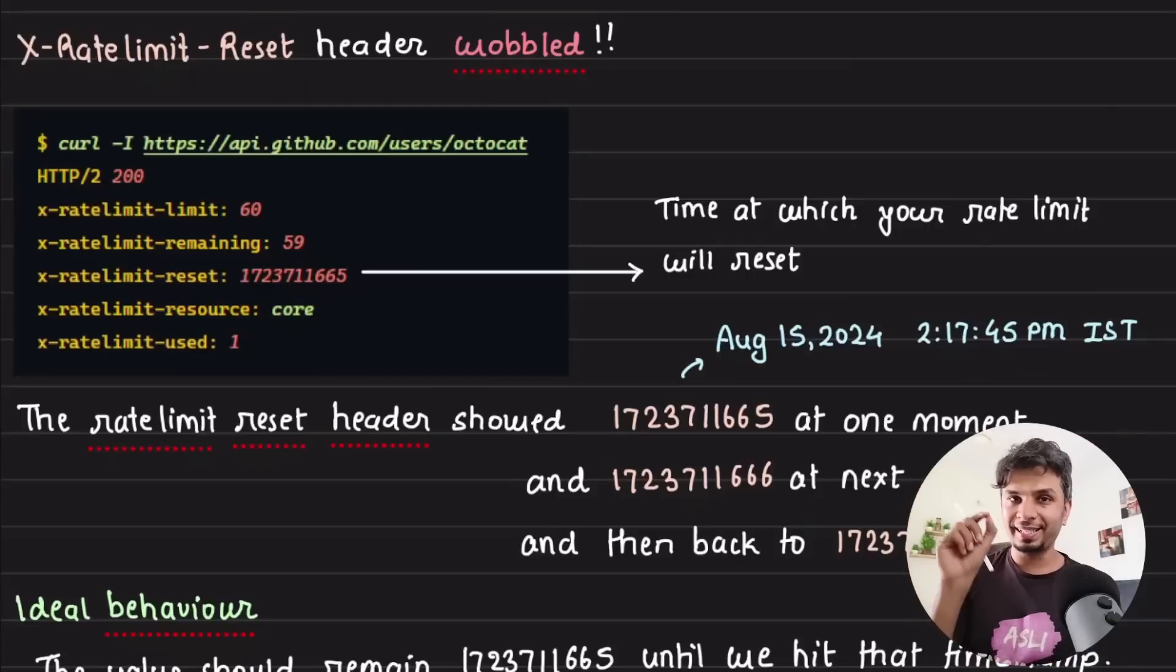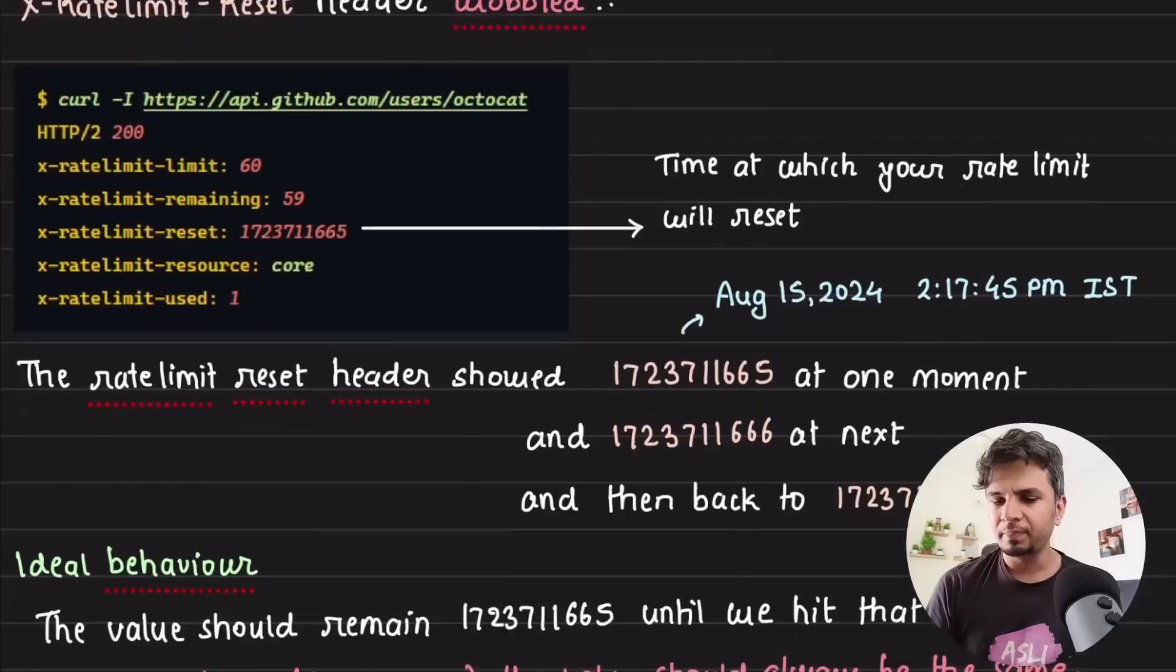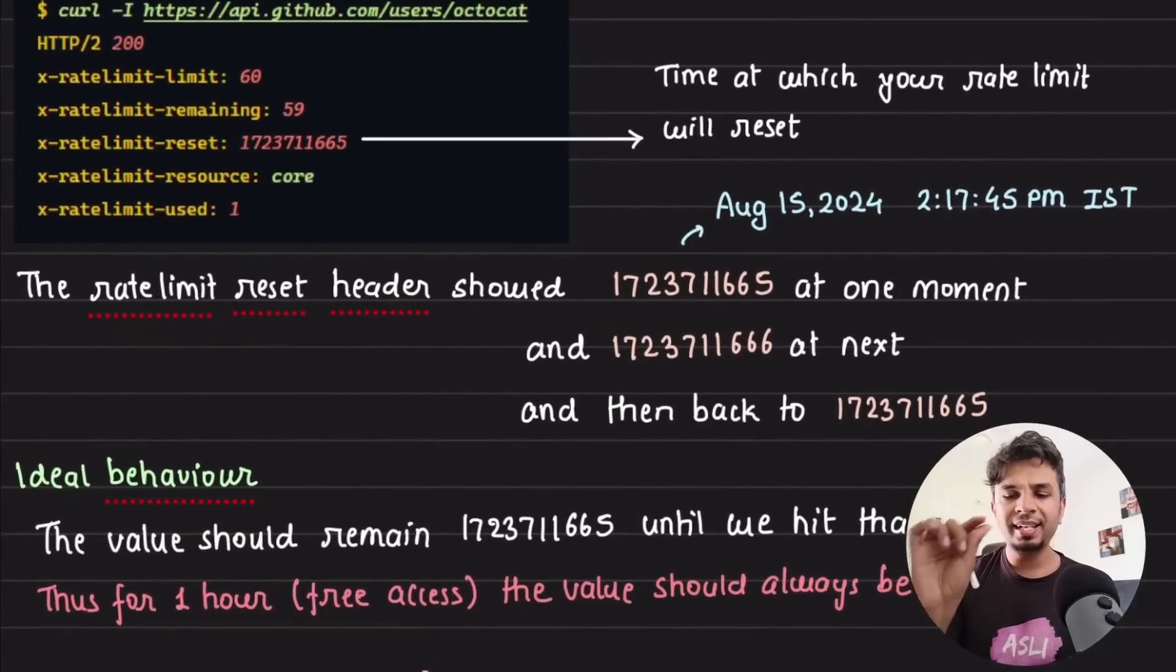So this tells you that it sends the exact time at which your rate limit will reset. That's the time it sends, and this is the header of our interest because this is what's going to wobble. Then it says rate-limit-resource and rate-limit-used, and so on and so forth. Now what is wobbling here? The rate-limit-reset header is wobbling.